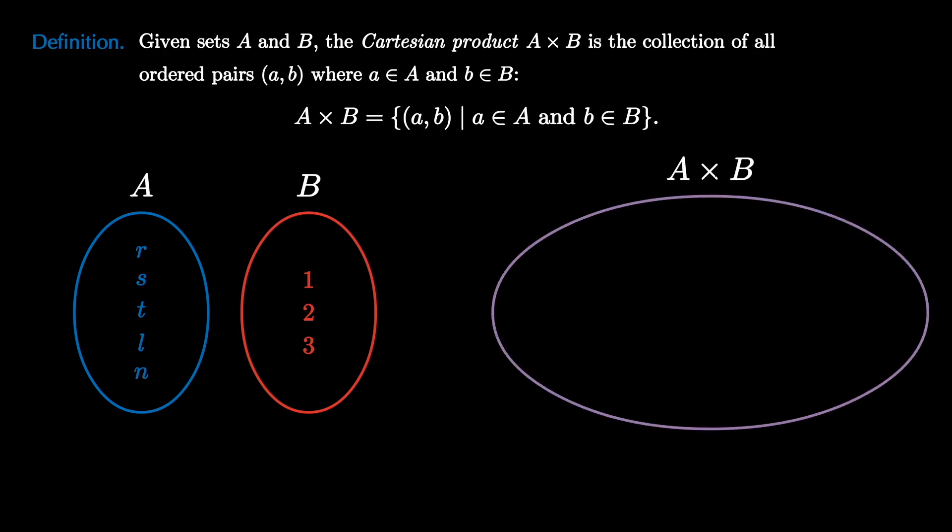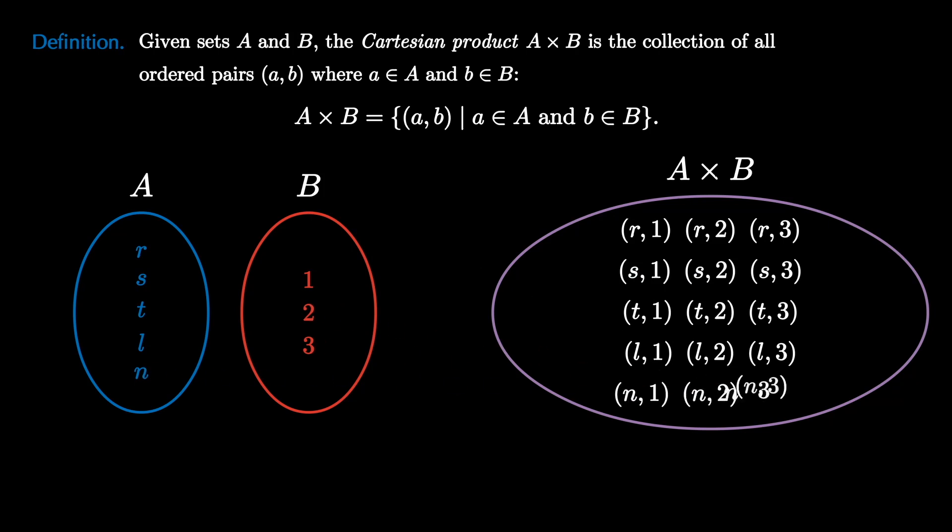As an example, we've listed five elements in A and three elements in B. So to build the Cartesian product, we need to pair up every single element of A with every single element of B. And so we see R pairs with 1, 2, and 3, S pairs with 1, 2, and 3, T pairs with 1, 2, and 3, L pairs with 1, 2, and 3, and N pairs with 1, 2, and 3. This creates the entire Cartesian product.